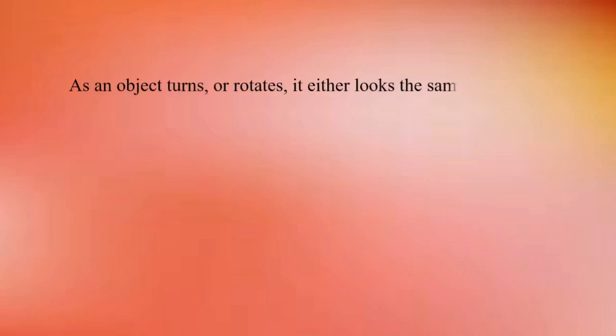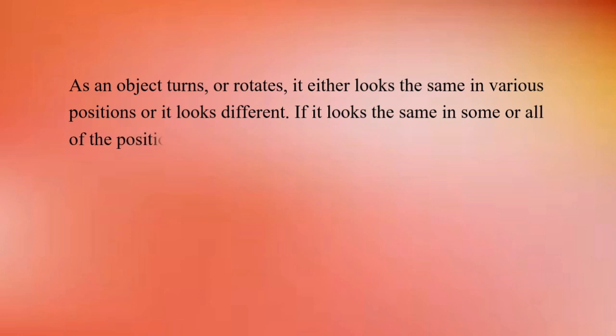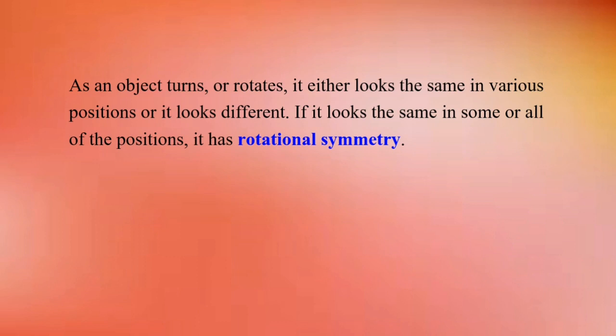As an object turns or rotates, it either looks the same in various positions or it looks different. If it looks the same in some or all of the positions, it has rotational symmetry. It means that when we turn or rotate an object, if it looks the same, then we say that this object shows rotational symmetry.